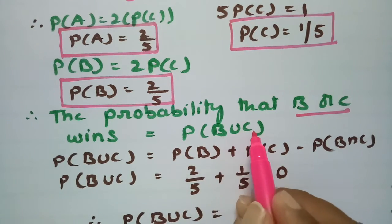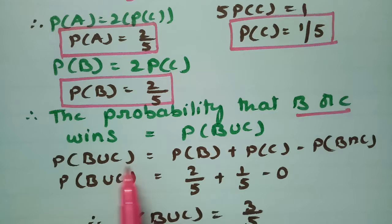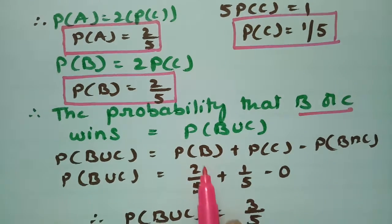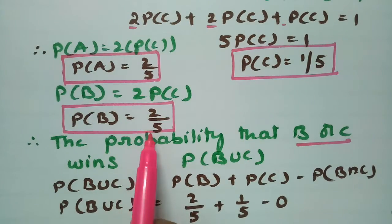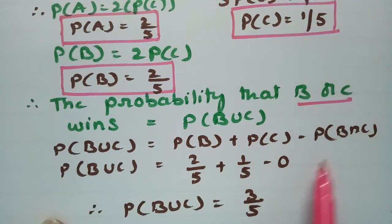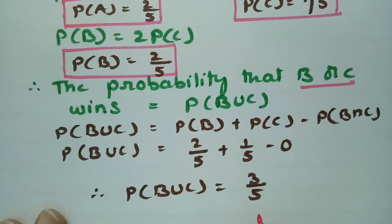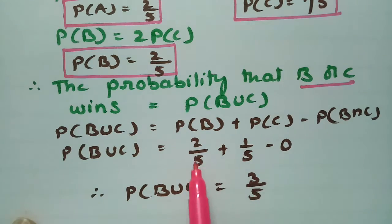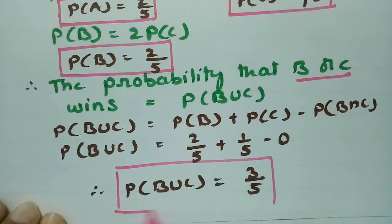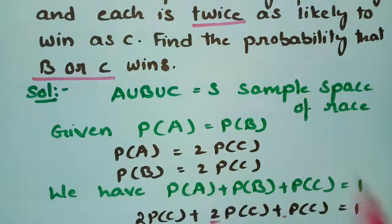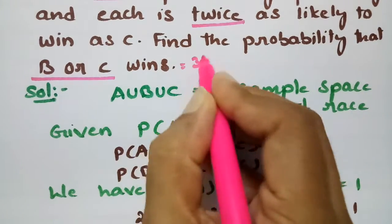The probability of B or C winning is P(B union C), which equals P(B) plus P(C) minus P(B intersection C). P(B) is 2 by 5, P(C) is 1 by 5, and the intersection is 0 since these are mutually exclusive events. Therefore 2 plus 1 equals 3, so the probability that B or C wins is 3 by 5.